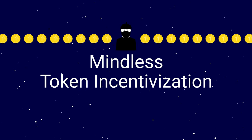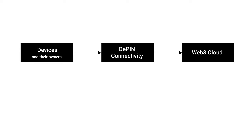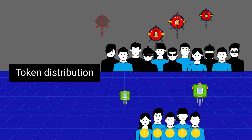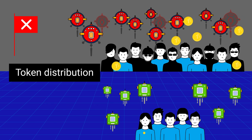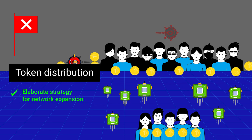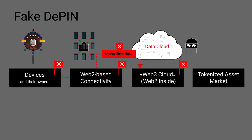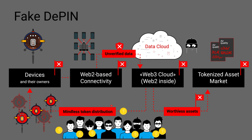Mindless token incentivization. In DePIN projects, you can find token incentivizations for network development, such as distributing tokens for simply connecting a device to the network. This helps expand it, but mindless distribution of free tokens leads to uncontrolled network growth, attracting scammers, and ultimately to collapse. Any token incentivization for network expansion must be well thought out, with verification of the useful work of participants. Failure to comply with these fundamental principles of Web3 and decentralized tech will result in the project calling itself DePIN either collapsing or moving to a completely different model, deceiving the expectations of its participants.